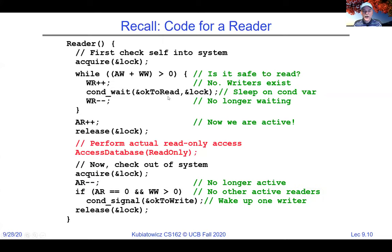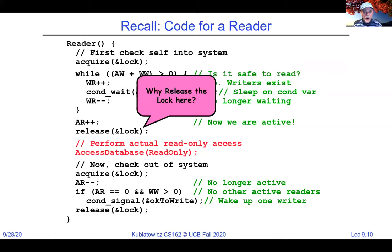WR++ and WR-- track the number of readers inside the sleep queue. We can't move them outside the loop because waiting_reader++ means there's somebody sleeping on the sleep queue — we only want to say we're waiting if we're actually going to sleep. We release the lock before entering the database to allow more readers to come through the entry point simultaneously.